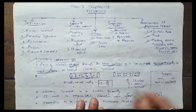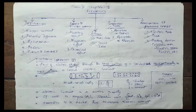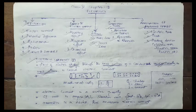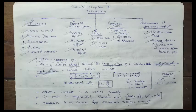Before we understand the definition of electric current, let's talk about these terms: charge, cross-section, unidirectional, and unit time. What is charge? Matter has two important properties: mass and charge. If two bodies have mass, they exert a gravitational force. Just like that, if two bodies have charge, they exert a force — it may be a repulsive force or an attractive force. That's electrical force. The property of matter by virtue of which a body exerts electrical force of attraction or repulsion is called charge.